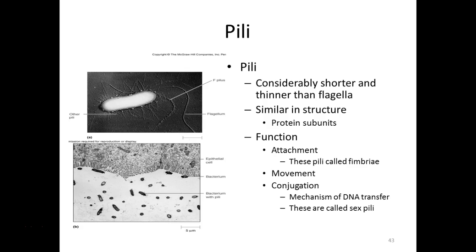Gonorrhea is avoidable — you don't get it from sitting on a toilet seat. Fimbriae can also twitch and help bacteria move. A specialized sex pilus joins two cells in a process called conjugation — sometimes referred to as bacterial sex because they're exchanging genetic information, which is essentially what sexual reproduction boils down to.